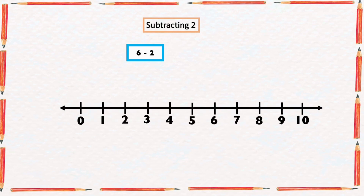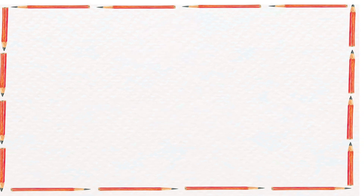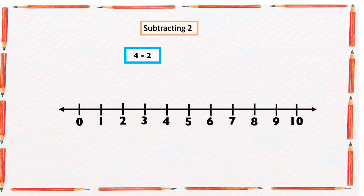Here we have 6 minus 2. With our number line, we're going to start from number 6 and count two numbers backward: one, two. And the arrow ended at 4, so 6 minus 2 equals 4.